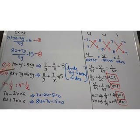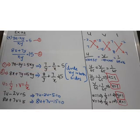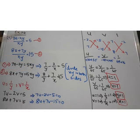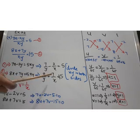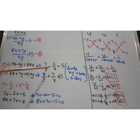After that, divide both equations by xy. When dividing 7x by xy, x and x cancel leaving 7 by y. Dividing 2y by xy, y and y cancel leaving 2 by x. On the right side, 5xy by xy cancels leaving 5. Similarly for the second equation: 8x divided by xy gives 8 by y, and 7y divided by xy gives 7 by x, and 15xy by xy gives 15. Now we have 1 by y and 1 by x terms, so substitute u for 1 by y and v for 1 by x. The equations reduce to: 7u minus 2v equal to 5 and 8u plus 7v equal to 15.